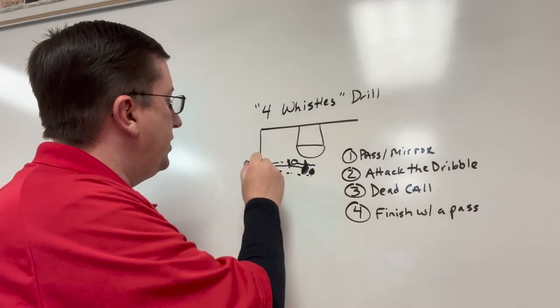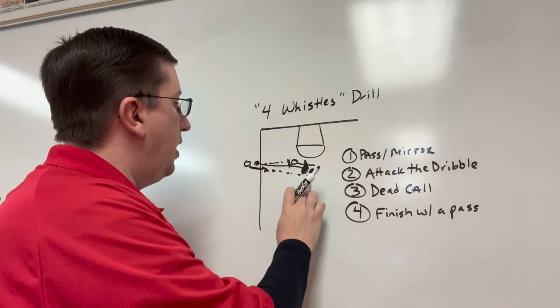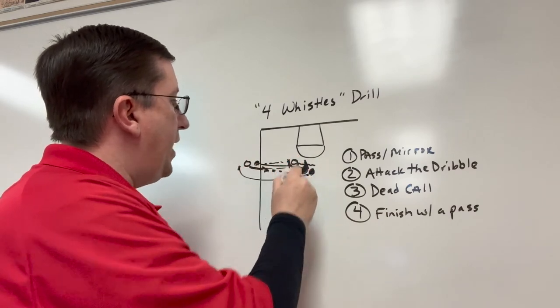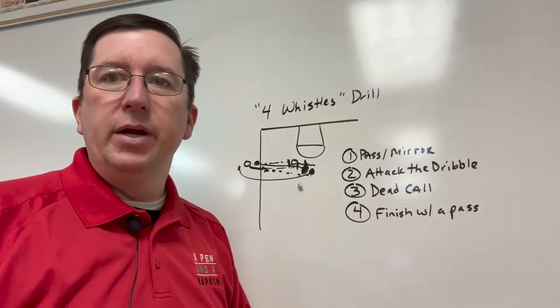This player that was the offensive player will now go to the offensive end. This player will go to the back of the line. This player will pass it out and will jump right into it.